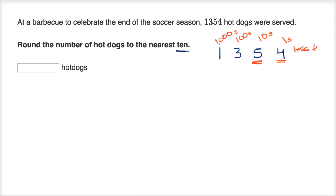Since it's less than five, we round down to exactly five tens, or 1,350. We have rounded to the nearest 10: 1,350 hot dogs.